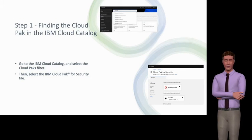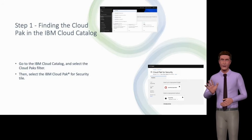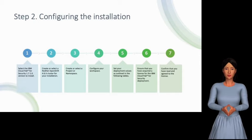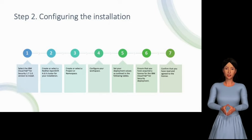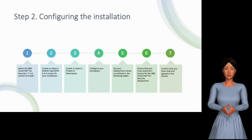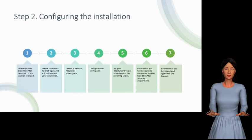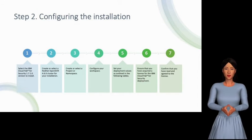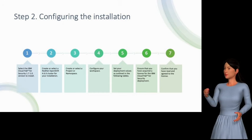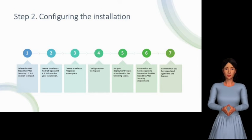Go to the IBM Cloud Catalog and select the Cloud Pak's filter, then select the IBM Cloud Pak for Security tile. Step 2: Configuring the installation. 1) Select the IBM Cloud Pak for Security 1.7.1.0 version to install. 2) Create or select a Red Hat OpenShift 4.6.x cluster for your installation. 3) Create or select a project or namespace. 4) Configure your workspace. 5) Set your deployment values as outlined in the following tables. 6) Ensure that you have acquired a license for the IBM Cloud Pak for Security deployment. 7) Confirm that you have read and agreed to the license.